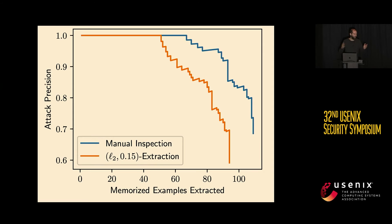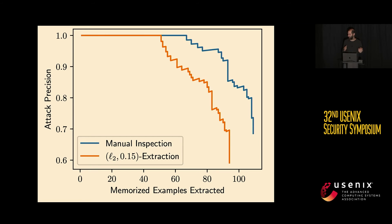We have plots in the paper evaluating how well this works in practice, looking at precision and recall. On the X-axis is the number of examples extracted, and on the Y-axis is the precision of our attack. We generated roughly a couple million images, so the baseline precision is about one in a million. But we find we can identify the first 60 memorized images with perfect precision. If you want to find all 100 memorized images, precision drops to roughly 70% — far better than one in a million.